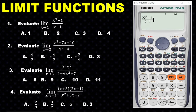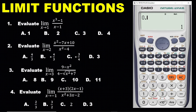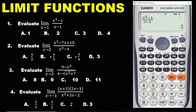Go back and press CALC again. Enter a number close to one from the left-hand side — for example, 0.999999. This is a number close to one but not one. The answer we get is three. So when we use a number close to one from the left, the result is three.